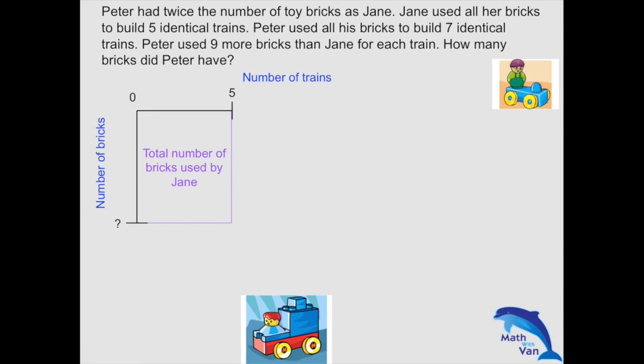And then going to Peter, we know that Peter had twice the number of toy bricks as Jane. So if Jane could build 5 of these identical trains, Peter could have built 10, right? So again, we know that this would be the total number of bricks that Peter had.